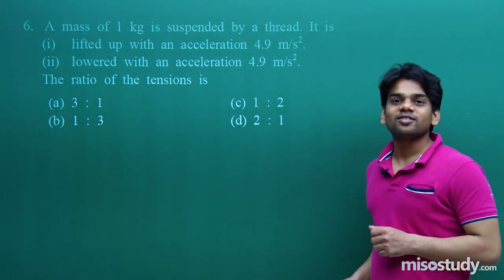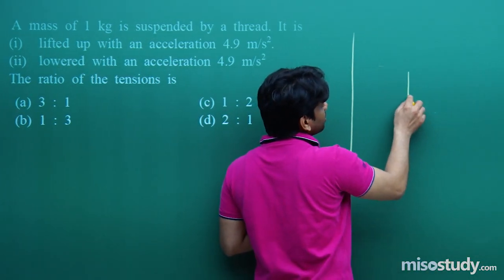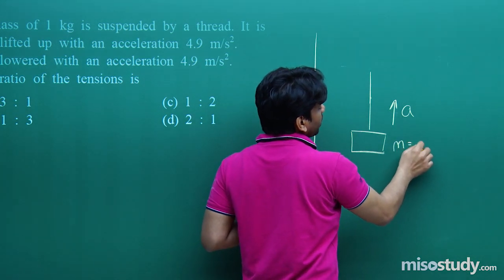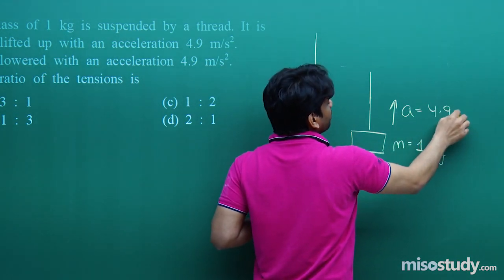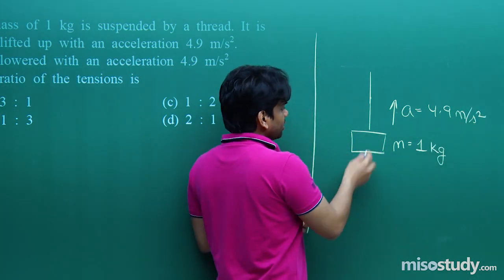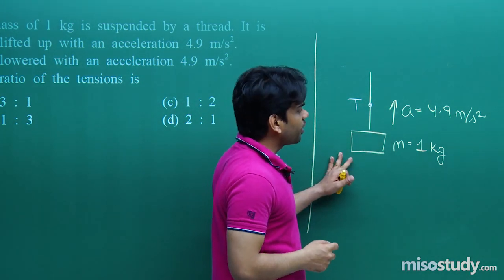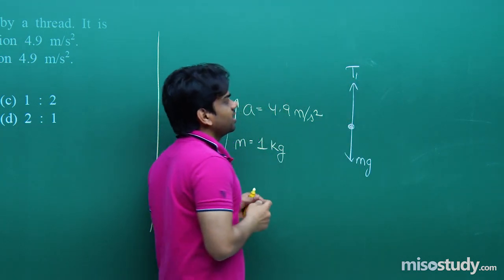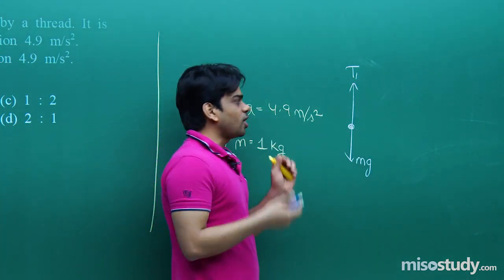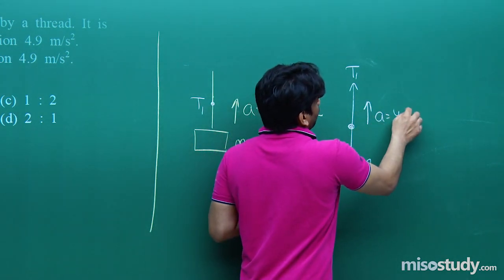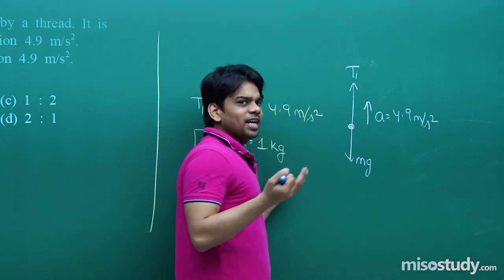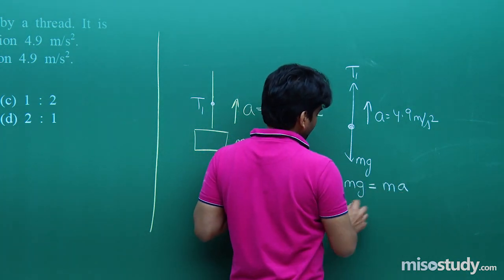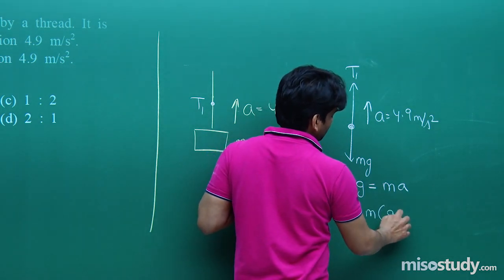Let's see what tension is created in both cases. In the first case, the block is lifted up. Mass is 1 kg, acceleration is 4.9 m/s². Drawing the free body diagram: mg acts downward, tension T₁ acts upward, acceleration a = 4.9 m/s² upward. From Newton's second law: T₁ − mg = ma, so T₁ = m(g + a). This is equation number one.